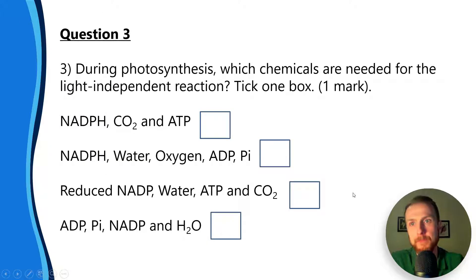Question three: during photosynthesis, which chemicals are needed during the light independent reaction? The answer is NADPH, CO2, and ATP.